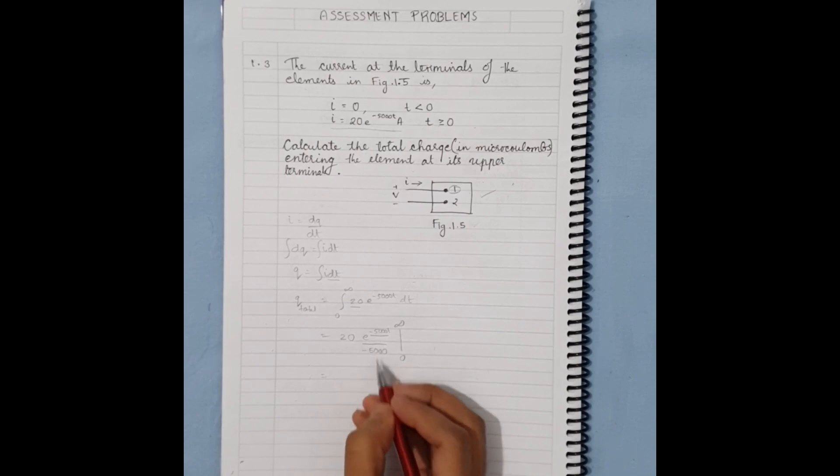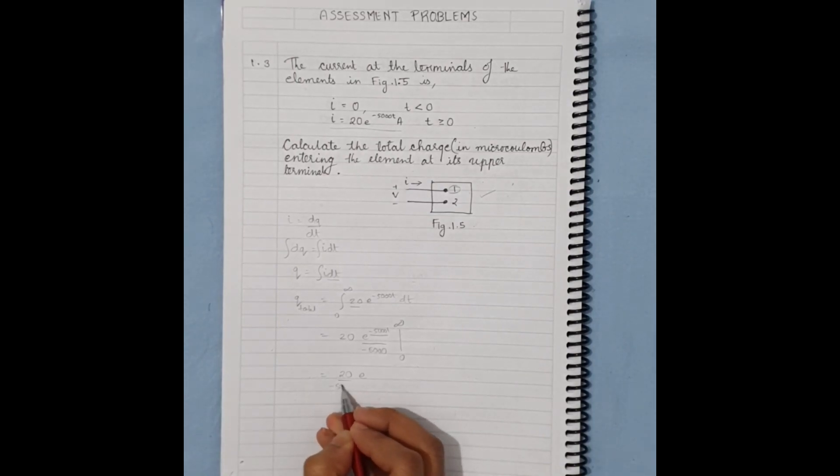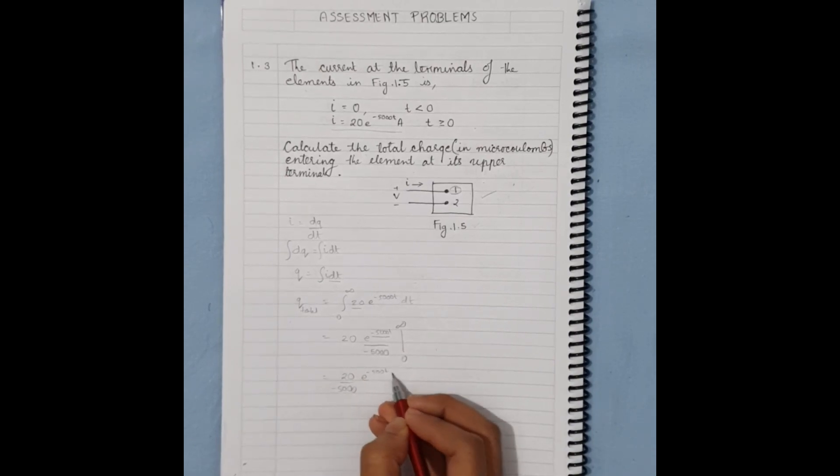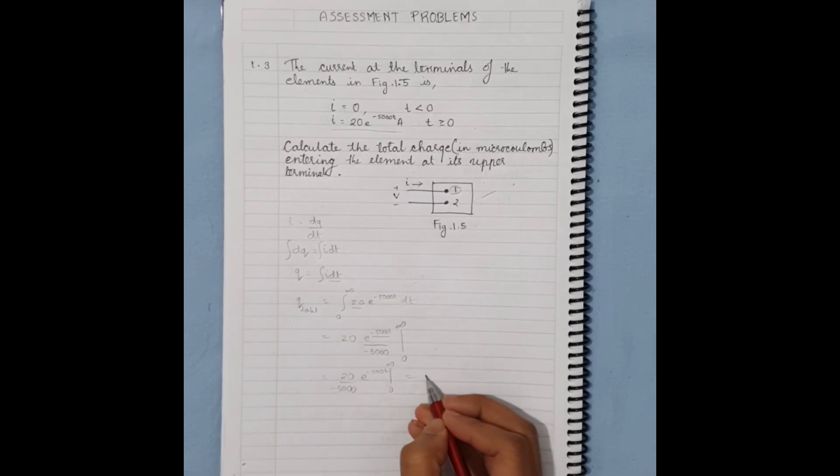After we solve for the intervals, we'll get 20 divided by -5000, and then we'll solve e^(-5000t) from zero to infinity.